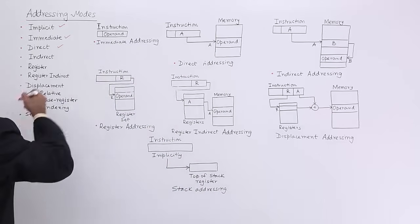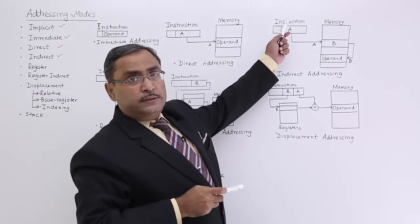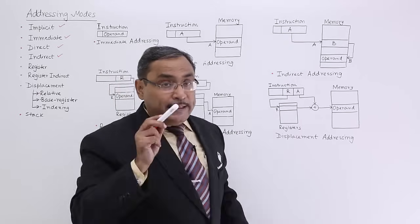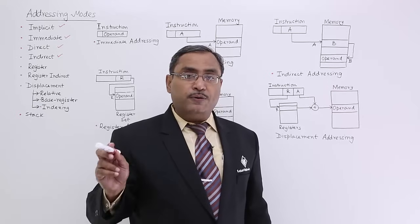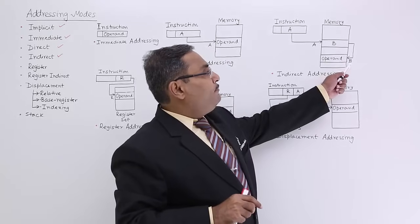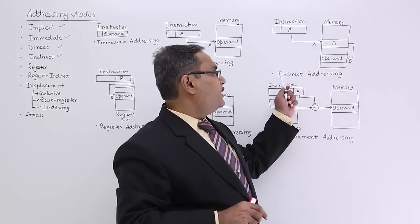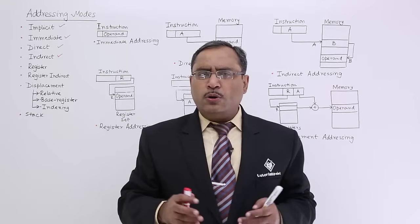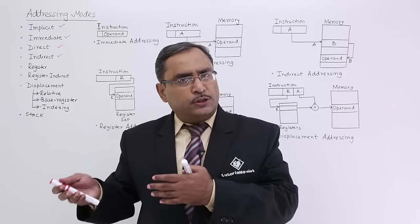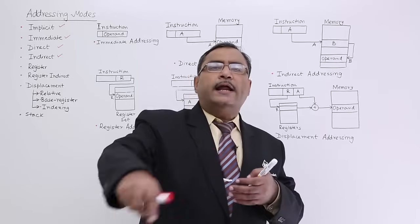Next is indirect addressing mode. The instruction contains the opcode and an address. But at that address, unlike direct mode, there is no operand — that location contains the address of the operand. For example: I don't know the phone number of Mr. Alam, so I call Mr. Dotto because Mr. Dotto knows Mr. Alam's phone number. That is indirect addressing.